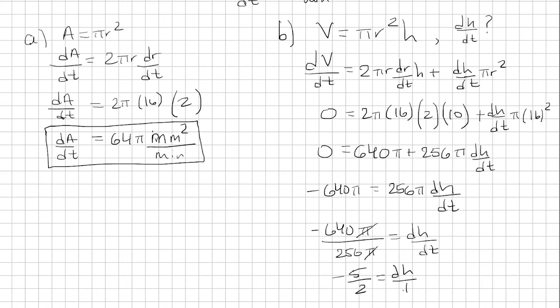So that's going to be the derivative of h with respect to t. And you want to make sure you have the correct units, because you always want to include the units here. So the height is millimeters and the time is minutes. So it's negative 5 halves millimeters per minute. And that's our answer to part b.